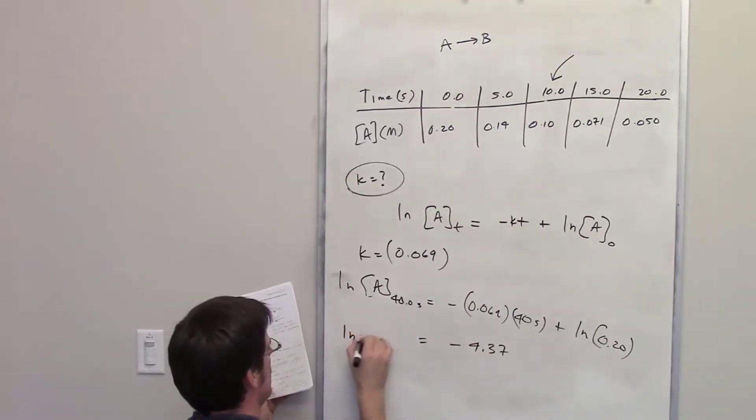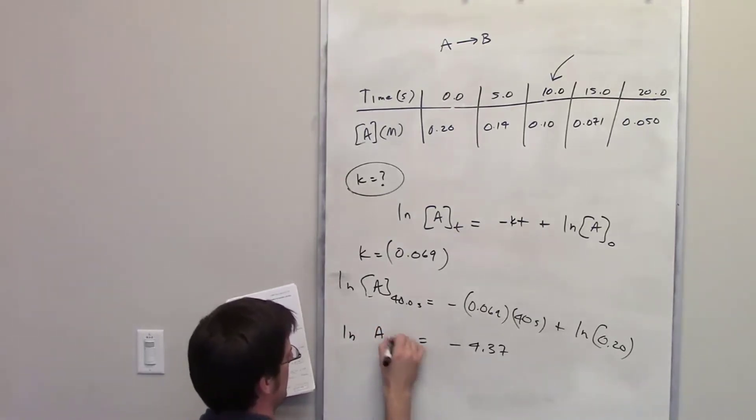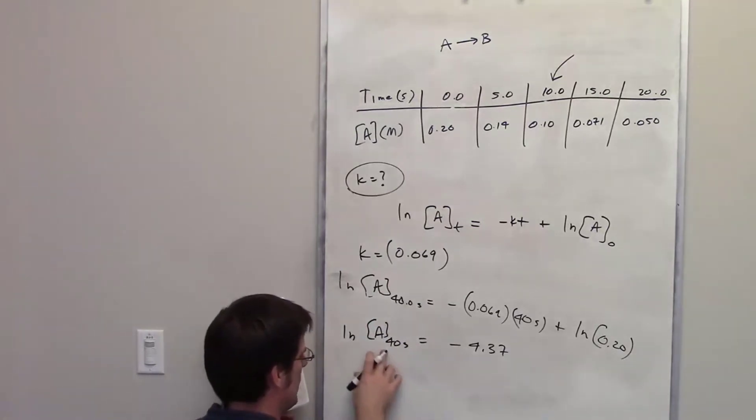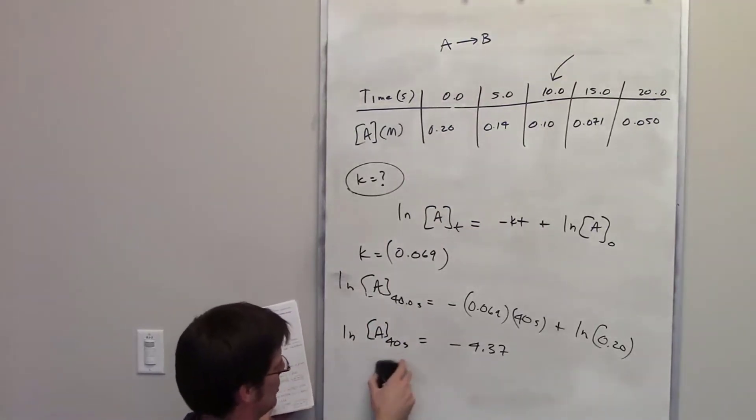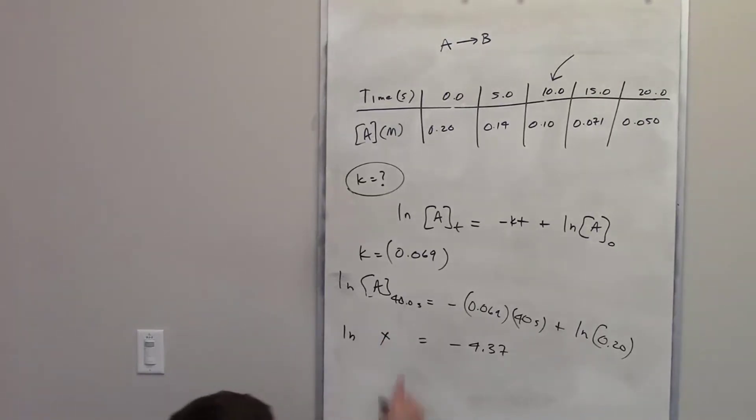I have now leftover the ln of A sub 40, concentration of A sub 40. How in the world do I figure out what this is? And honestly, this is a complicated, dorky-looking term. I'm just going to replace it with the term x. Hopefully we're okay with that. x represents the concentration of A at time 40.